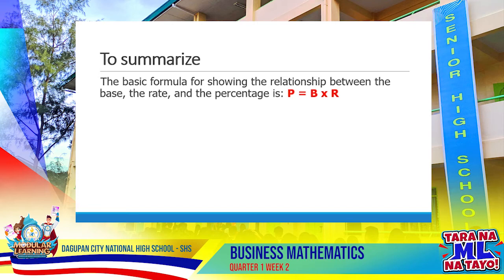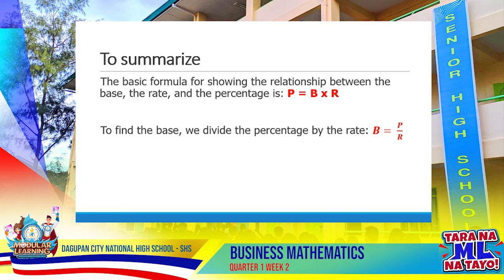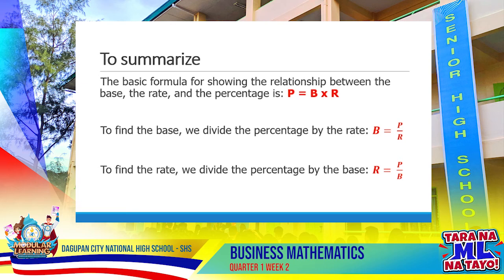To summarize the lesson: the basic formula for showing the relationship between the base, the rate, and the percentage is Percentage equals base multiplied by the rate. To find the base, we divide the percentage by the rate. To find the rate, we divide the percentage by the base.